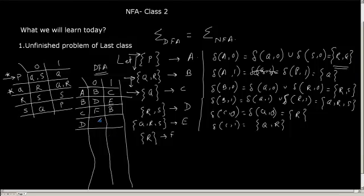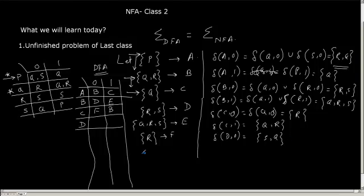So in this way you have to fill up. Suppose D — let it be delta of D comma 0. So delta of D comma 0, what will happen? D will be RS. So R comma 0 is S, and S comma 0 is Q. SQ is unique, so you have to create it. So it will be G.